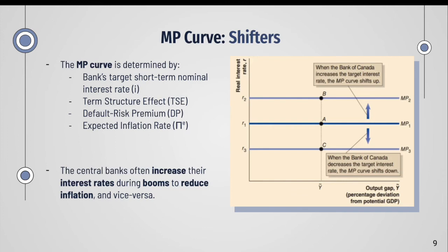With that final equation, we can identify the factors that shift the MP curve. The MP curve is determined by the bank's target short-term nominal interest rate, the term structure effect, the default risk premium, and the expected inflation rate. If any of these four variables change, the MP curve will shift. For example, when the Bank of Canada increases the target interest rate, the MP curve shifts up; when it decreases the target rate, the MP curve shifts down. Overall, central banks often increase interest rates during booms to reduce inflation, and vice versa.